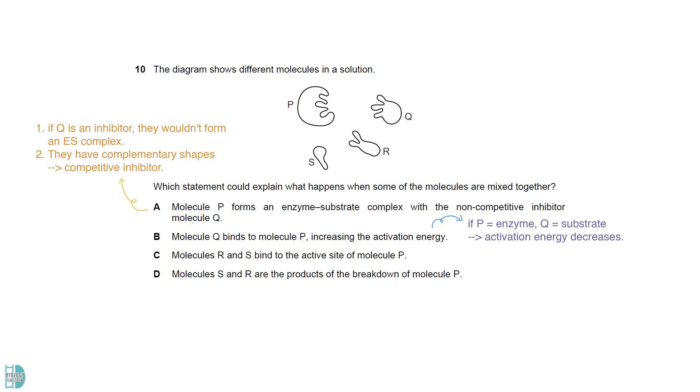C is the answer. R and S have complementary shapes to the active site of P, so it is possible that they can bind to each other. D is wrong. Judging from the shapes, we cannot break P to get S and R. It is more likely to break Q to get them.